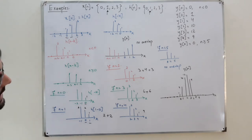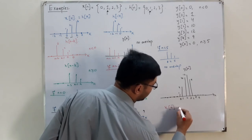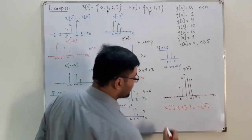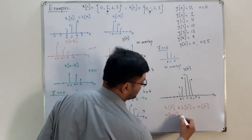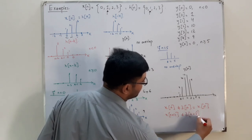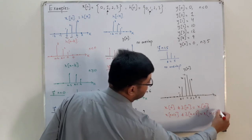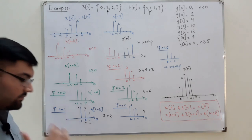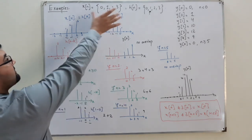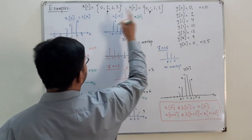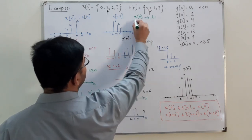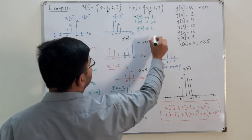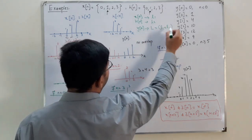Two useful properties: if you convolve x(n) with the impulse delta(n), you get x(n) back. Also, x(n+k) convolved with delta(n+l) gives x(n+k+l). Additionally, if x(n) has length L1 and h(n) has length L2, then y(n) has length L1 plus L2 minus 1.